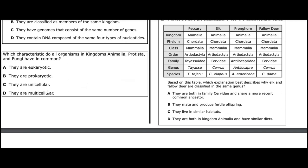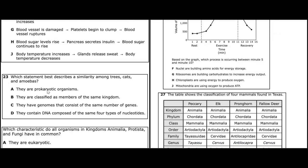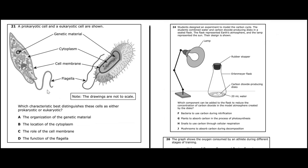Question twenty-four: which characteristics do all organisms in kingdoms Animalia, Protista, and Fungi have in common? They are eukaryotic — correct, all three kingdoms are eukaryotic. They are prokaryotic — none of them are. They are unicellular — not all; some Protista are unicellular but not all. They are multicellular — again, not all of them are. The answer is that they are all eukaryotic.